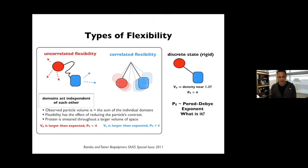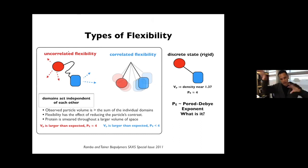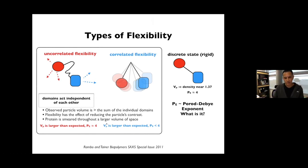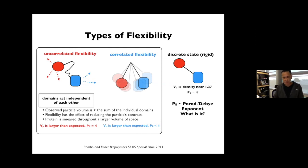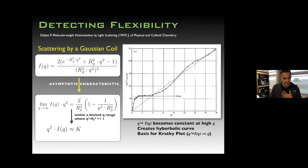There are roughly three structural states we can assess by SAXS. First, uncorrelated flexibility — two compact things moving independently but tethered — where the Porod volume is larger than expected and the Porod exponent is around 4. Second, correlated flexibility — like an implied string between them — where the volume is larger than expected and the Porod exponent is less than 4. Third, a discrete rigid state like calmodulin, where the volume is close to the ideal density of 1.3 and the Porod exponent is near 4.